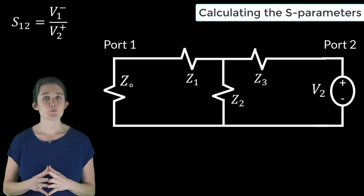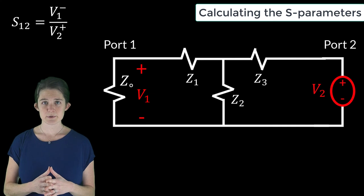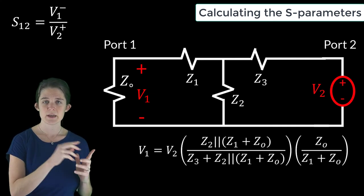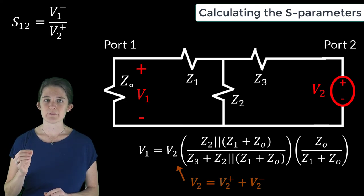Finally, to find S12, we need to find V1 in terms of V2, which is a simple circuit analysis problem with this solution. In this case, the total voltage at port 2 is equal to the sum of the inbound wave V2 plus and the outbound wave V2 minus.